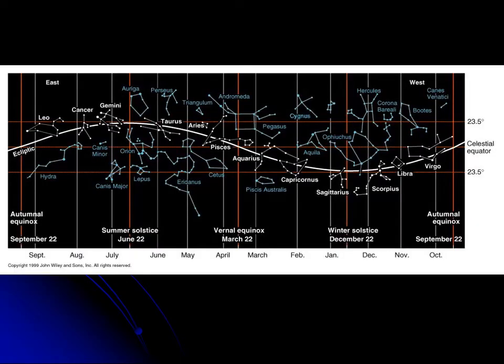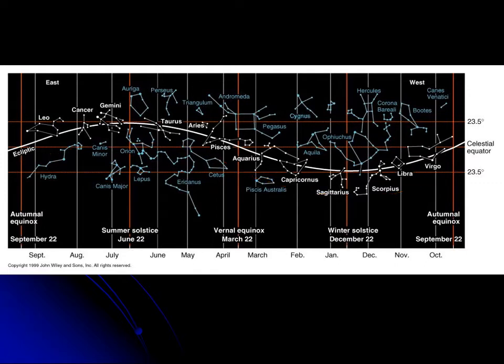If you take a map of the sky and plot the position of the Sun on it, the ecliptic makes a big arching path all the way around the sky. The ecliptic only reaches so far north and so far south — the farthest north the Sun ever gets is 23.5 degrees north, and the farthest south is 23.5 degrees south.